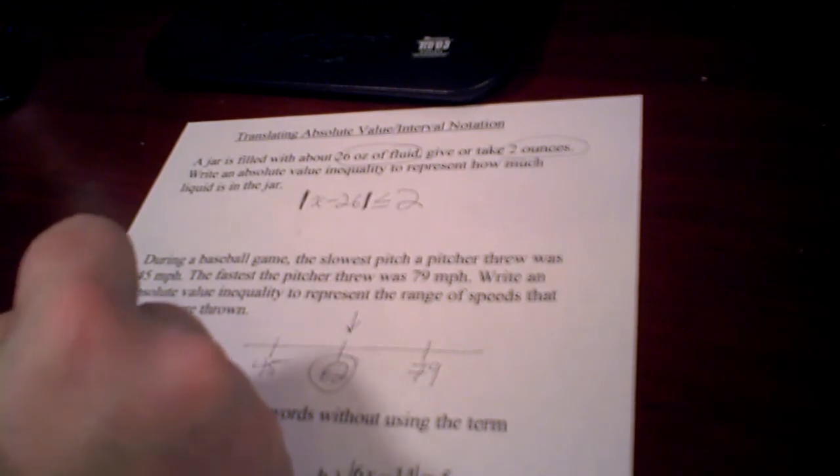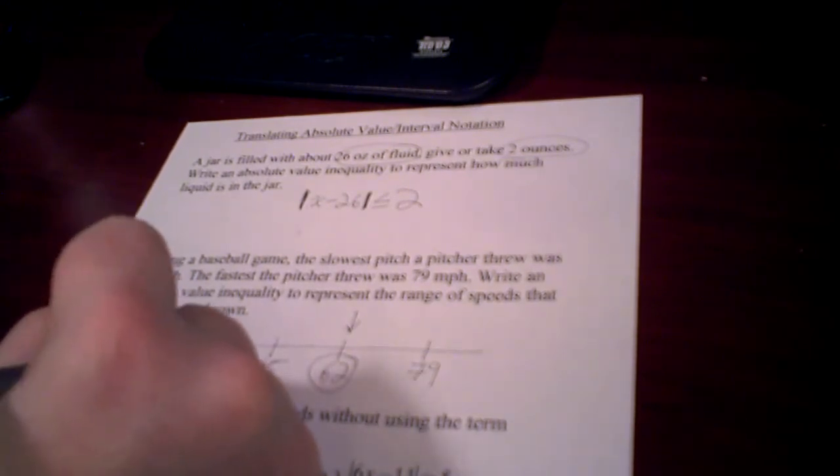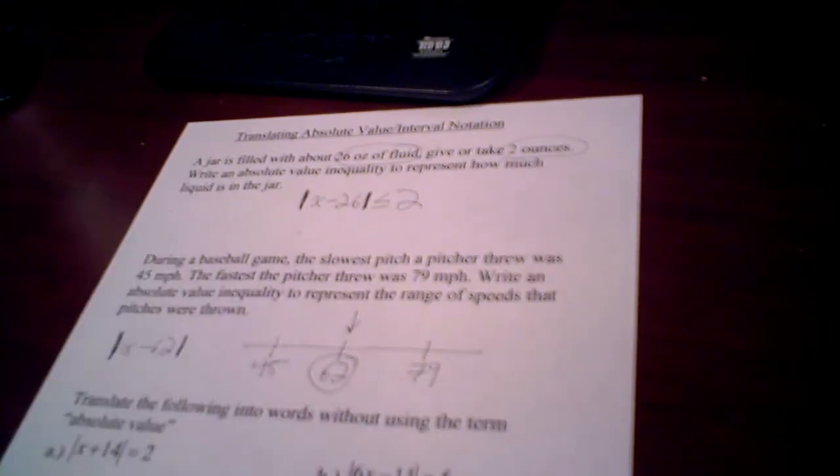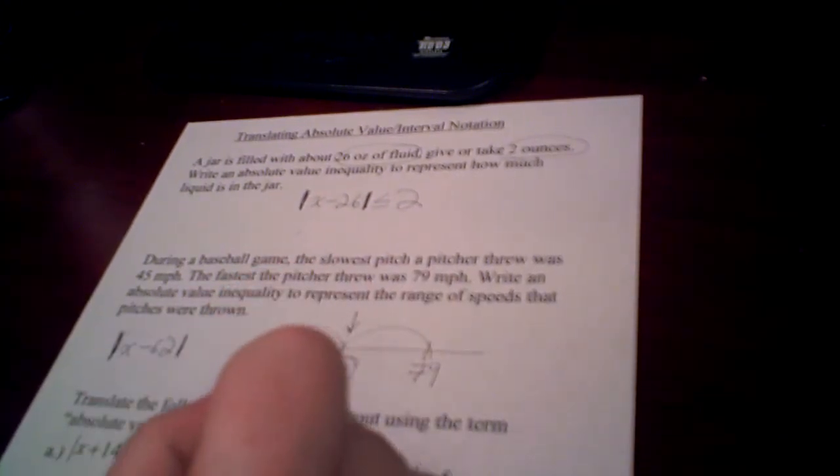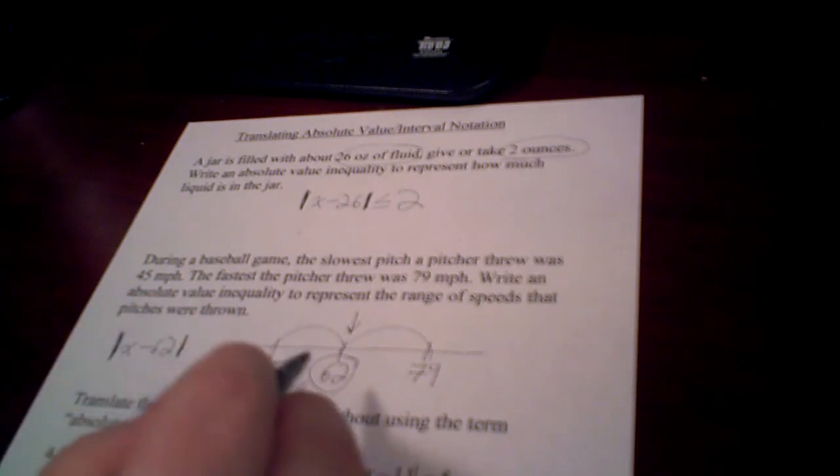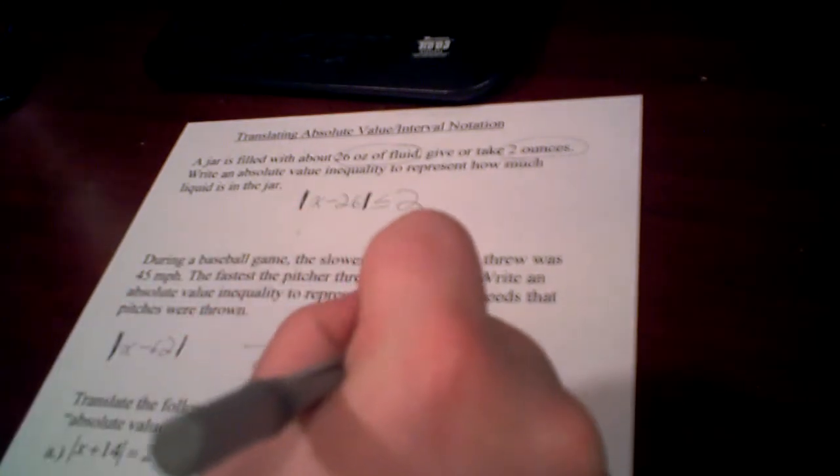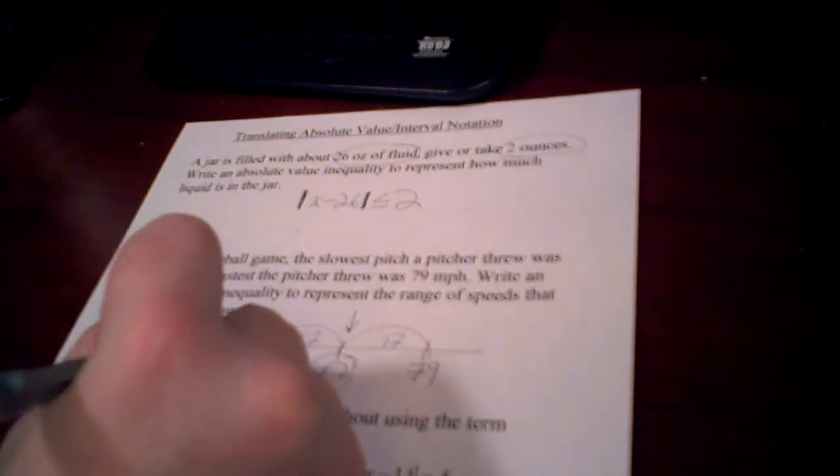So it's the distance away from 62, that's in the middle. So what is the distance away from 62? Well just count how far it is. You can just do 62 minus 45, which is 17. So is less than or equal to 17.